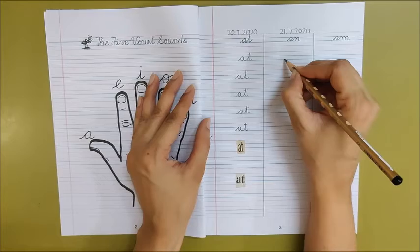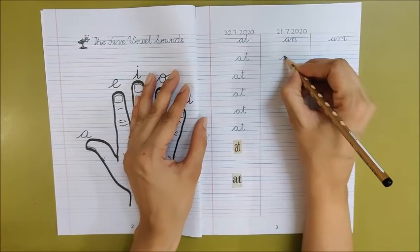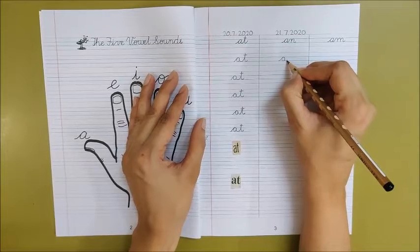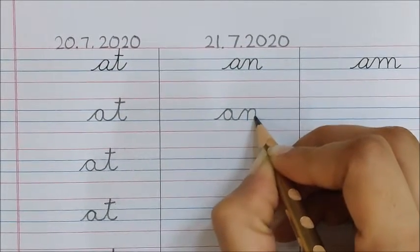Now let us write an. Children, you must say and write. A, na, an.